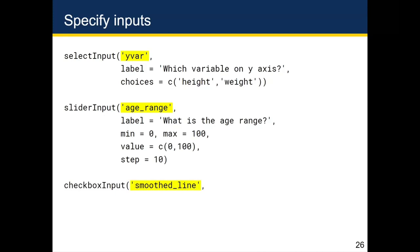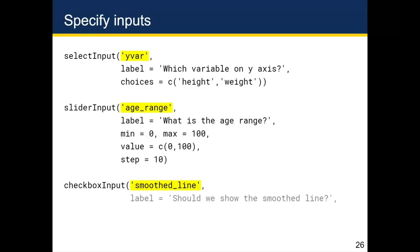To get the checkbox input to show up, I first name the variable 'smooth_line', add the label 'Should we show the smooth line?', and set the default value to FALSE. I could have said value equals TRUE in all caps and it would be checked by default.